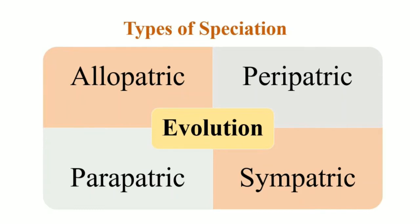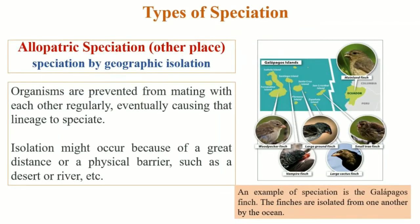We will discuss them one by one. First of all, allopatric speciation. Allopatric speciation is a type of speciation that occurs because of geographic isolation, in which individuals migrate from a parent population to far-off regions. Contact with the main population is completely lost.